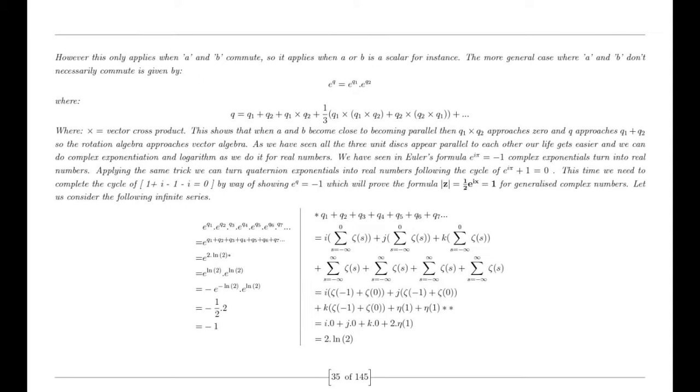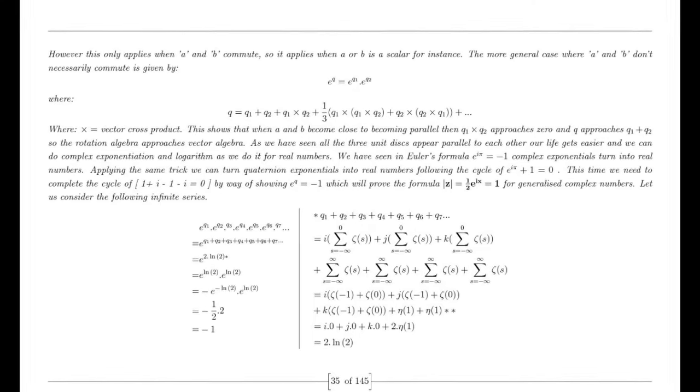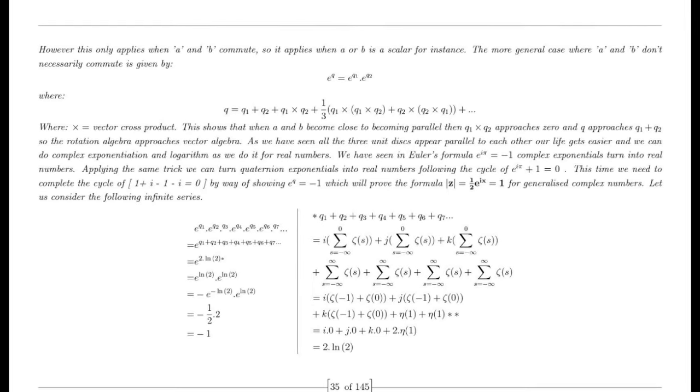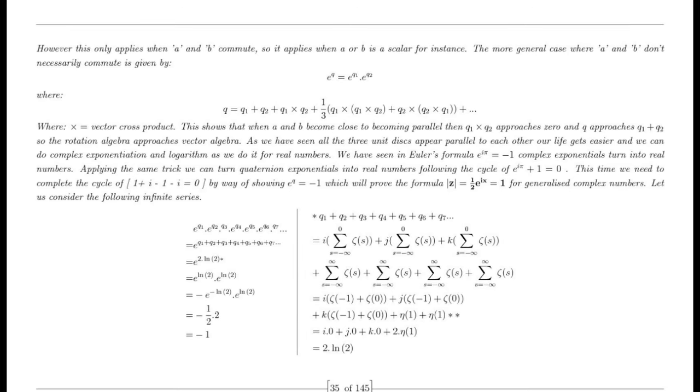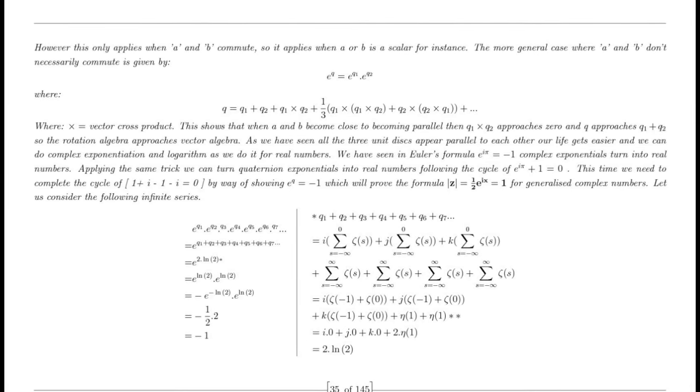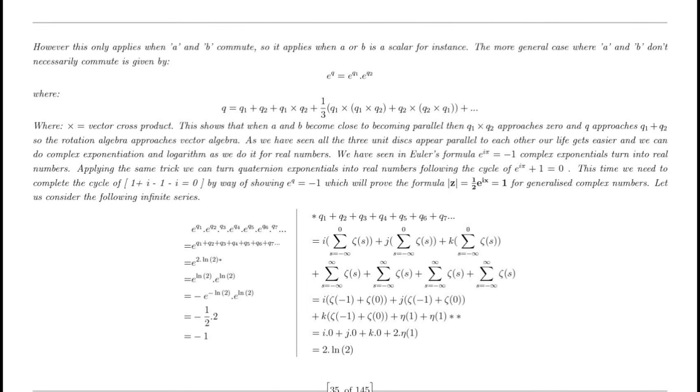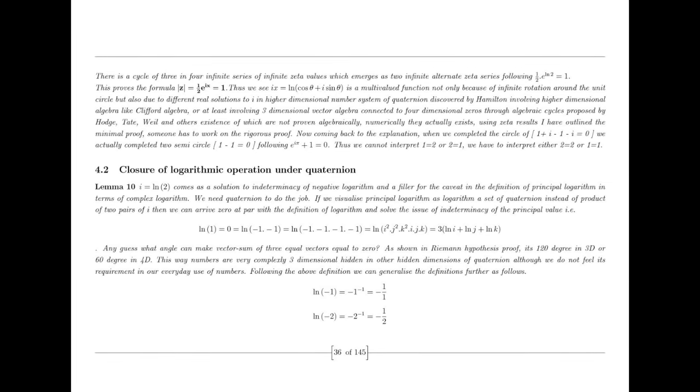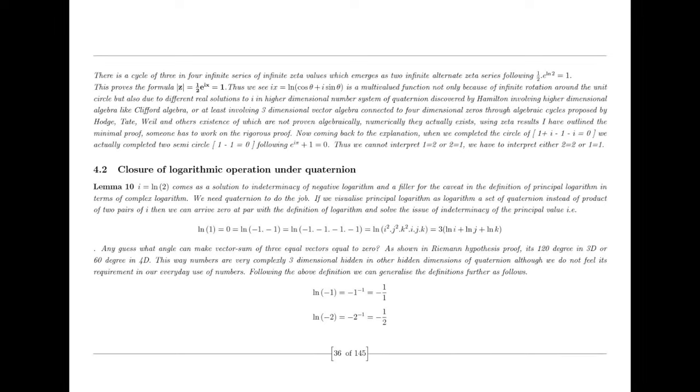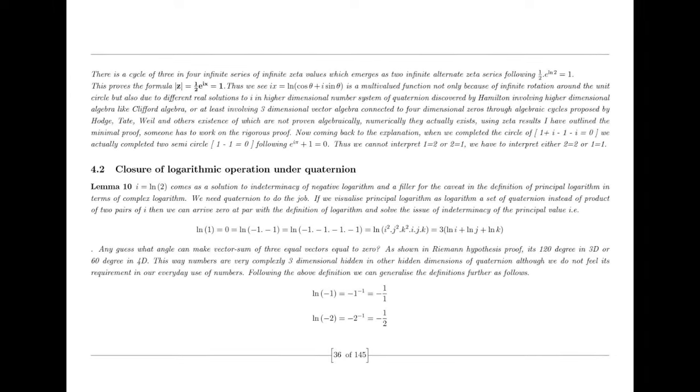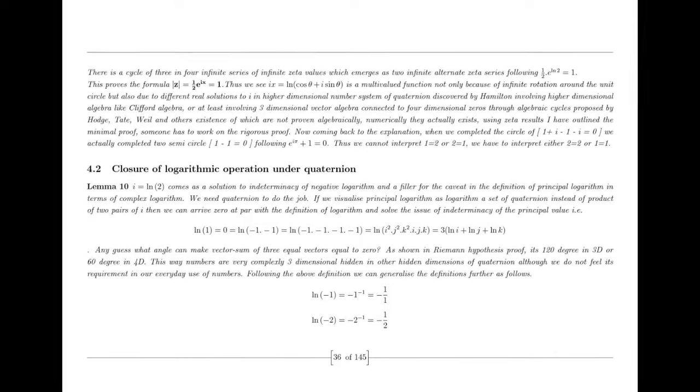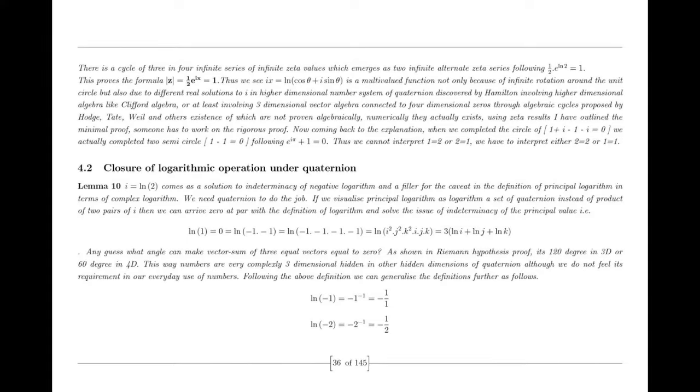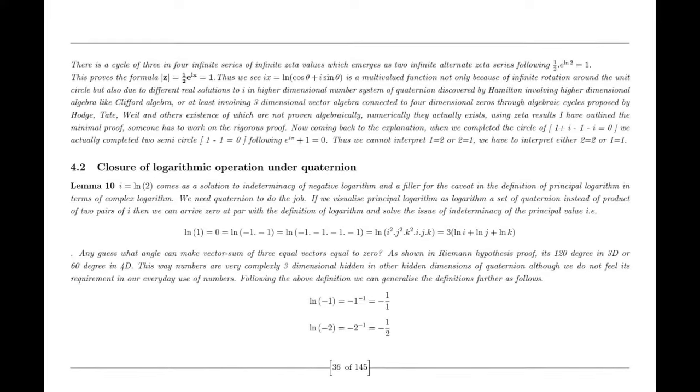Similarly, the Goldbach conjecture, which states that every even integer greater than two can be expressed as the sum of two prime numbers, could also be approached using the prime number theorem and the dual nature of numbers. By analyzing the distribution of prime numbers and their properties, we can provide a minimal proof that supports the Goldbach conjecture. It's important to note that while these minimal proofs may provide insights and a deeper understanding of number theory problems, they may not necessarily be considered complete or rigorous proofs. Number theory problems, especially those that have remained unsolved for a long time, often require extensive mathematical techniques and rigorous proofs to be fully resolved.